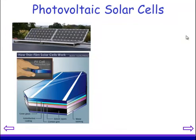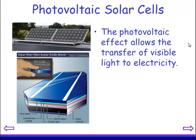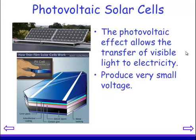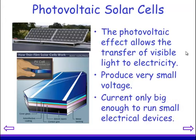Photovoltaic solar cells are the type of thing that you imagine when you think about solar energy. These solar cells work by transferring visible light directly into electricity. They produce a very small amount of voltage, and the current is generally only big enough to run some small electrical devices, so there's not a lot of energy there — but it's getting better all the time.